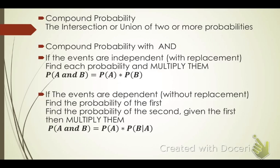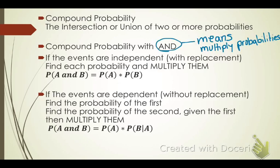When you have compound probability and you're using the word AND, that means you are going to multiply the probabilities. If the events are independent — that means with replacement — you're going to find each probability and then multiply them. So probability of A and B is the probability of A times the probability of B.